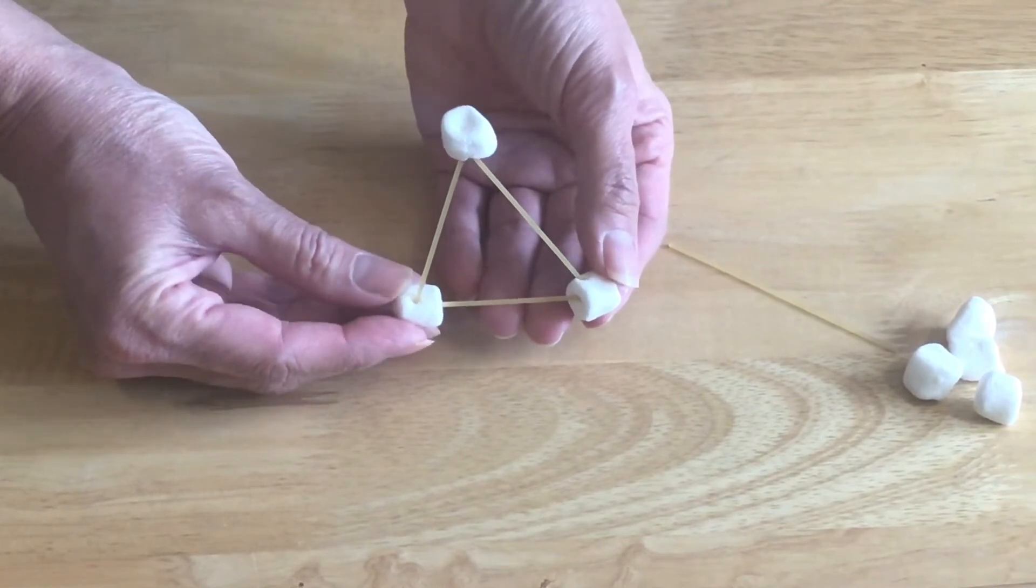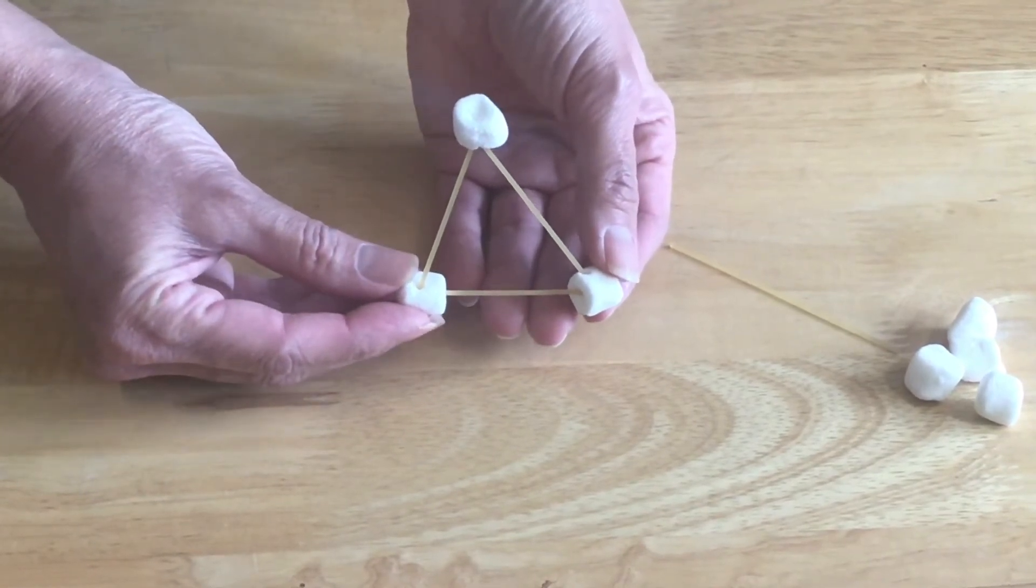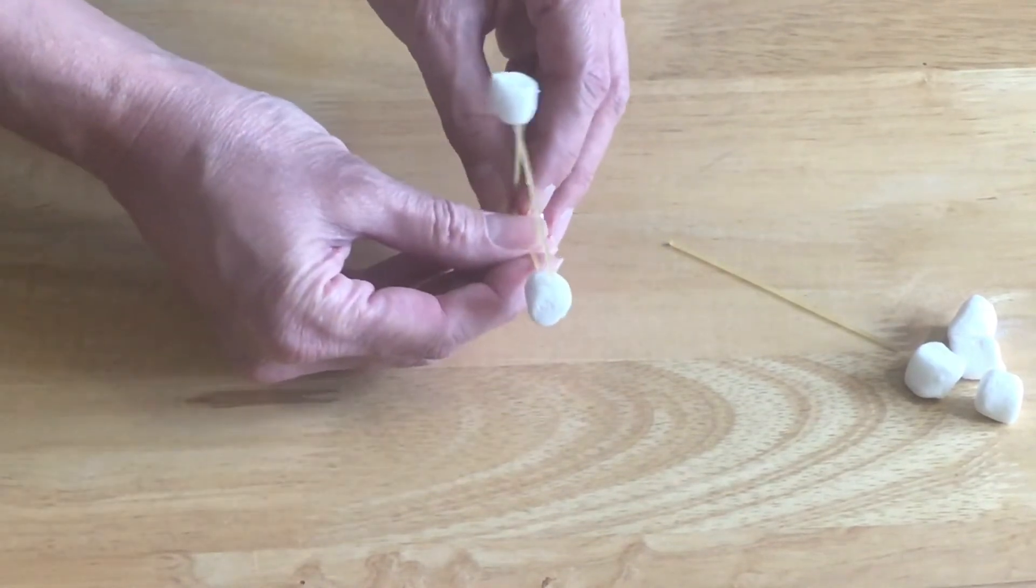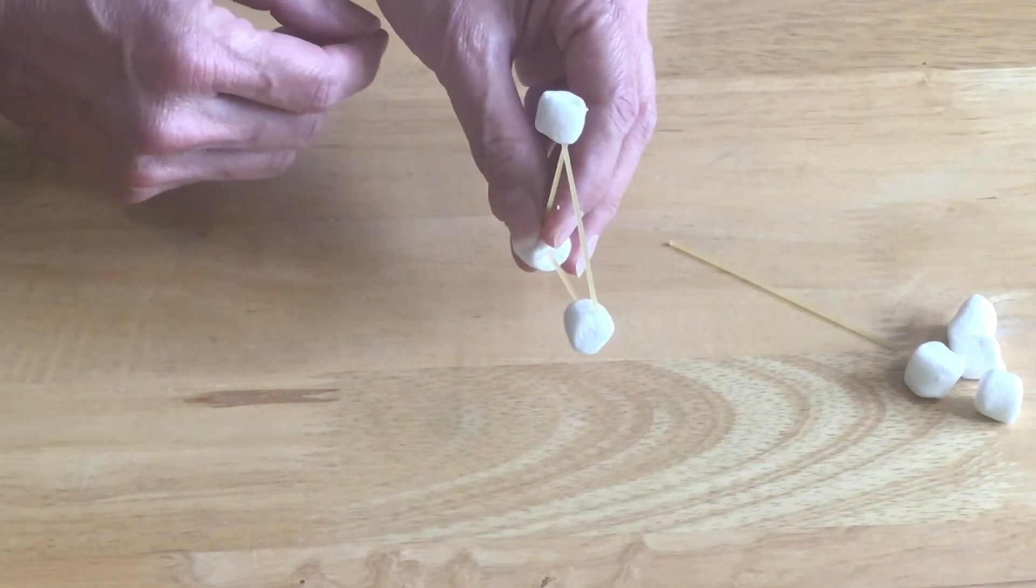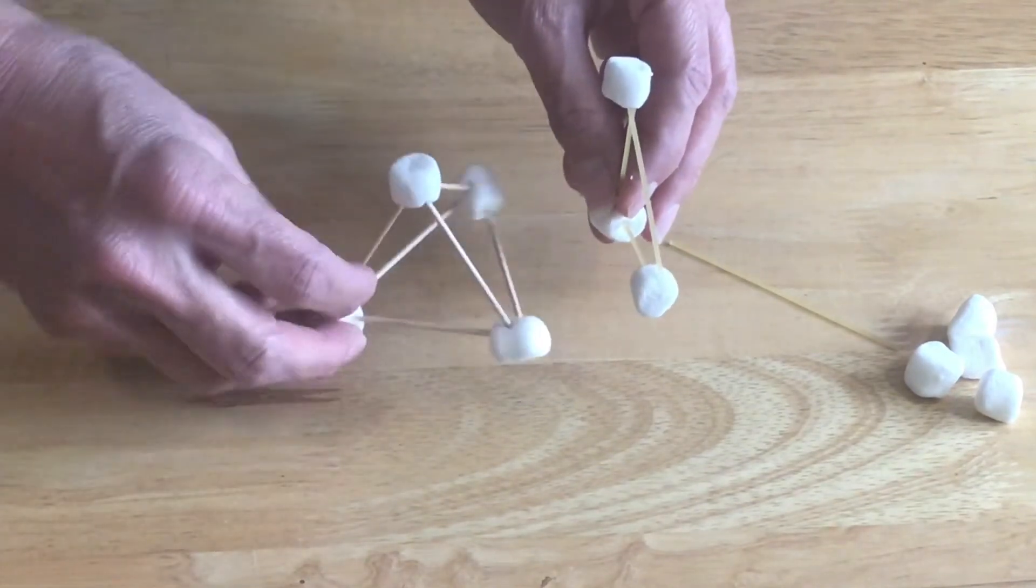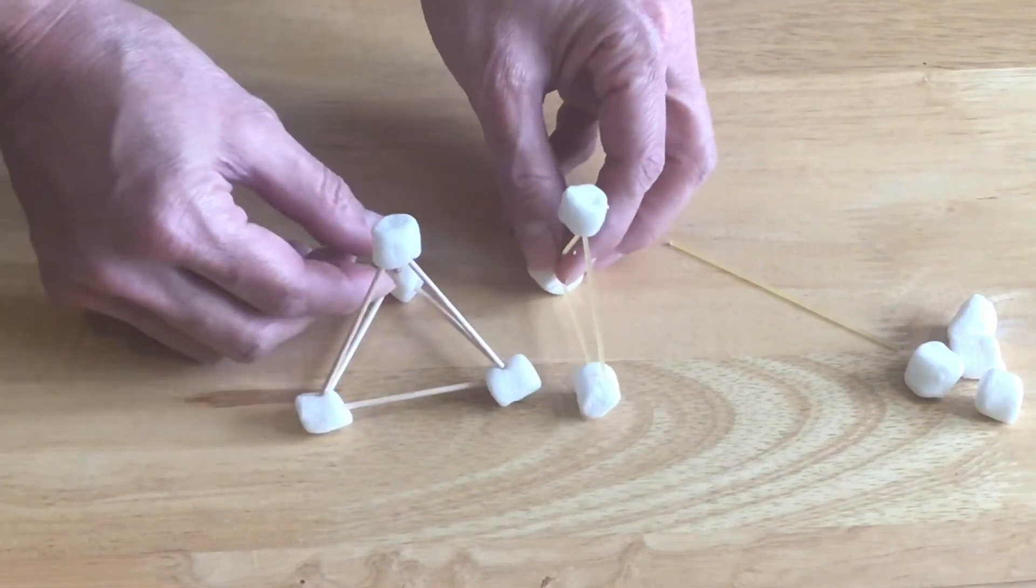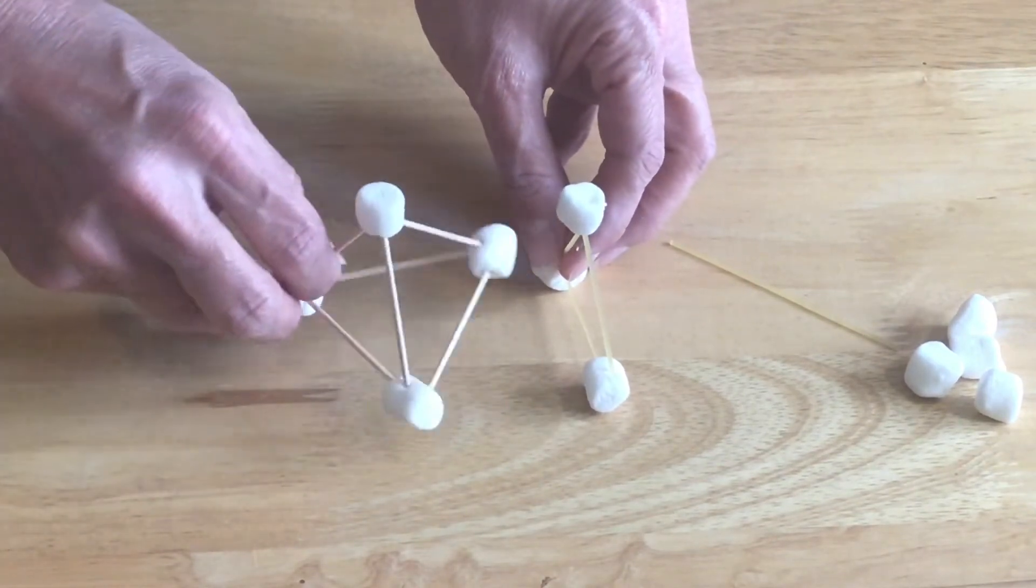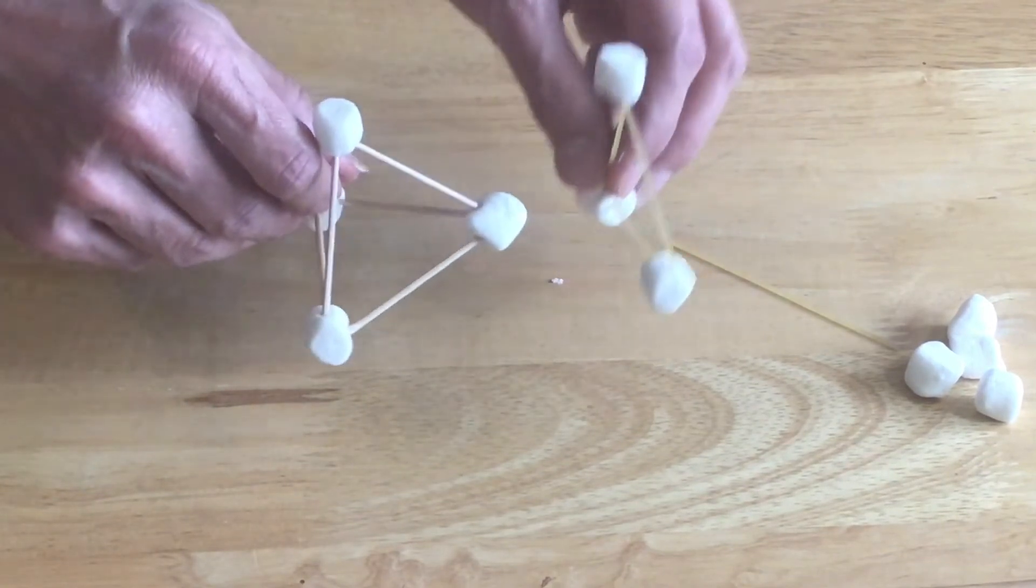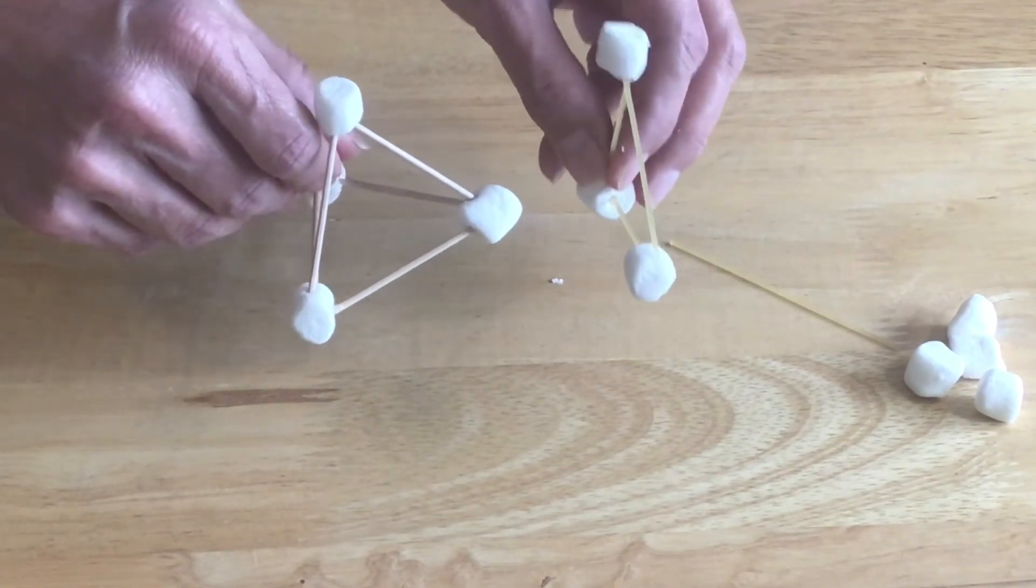Now this triangle is called a 2D shape, and we call it 2D because when you turn it sideways our shape is flat. We will show you a 3D triangle that I have built, and as you can see the difference between our two shapes. Our 3D shape is solid and not flat like our 2D triangle.